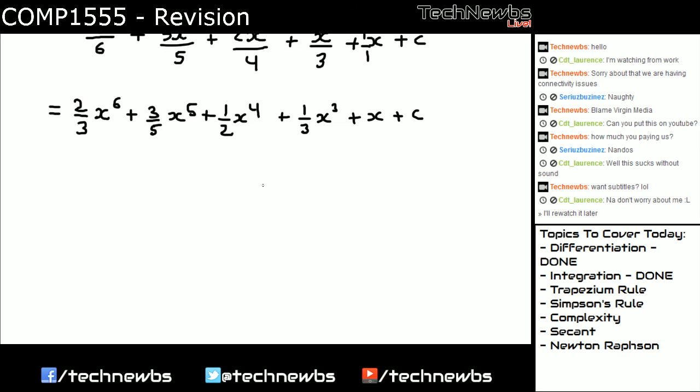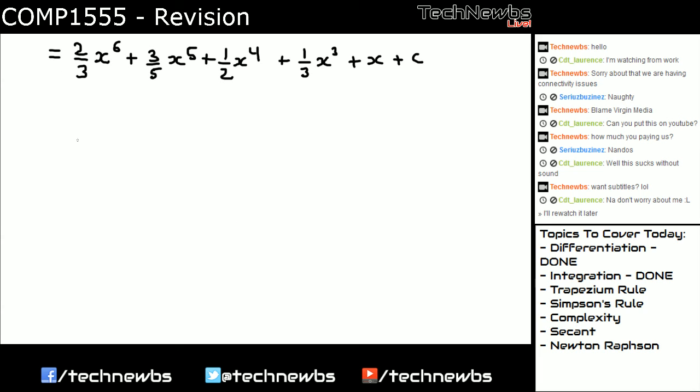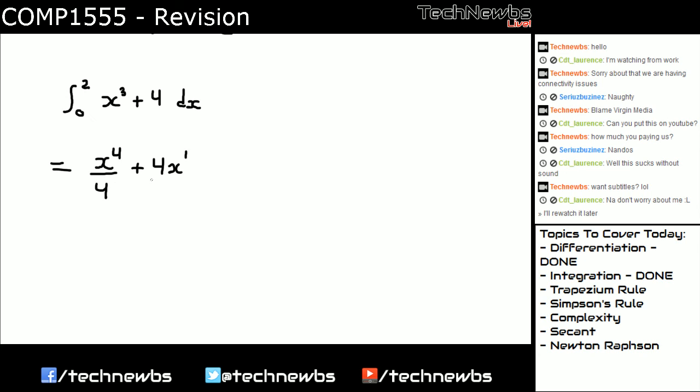That's why, let's do one with limits then. So let's do one from zero to two. And then let's just do a simple one. So x cubed plus 4 dx. So this is gonna be a simple one, but it's just to explain how to do it. So like I said, you first add one to the power, and then divide by the new power. x to the power of 4 divide by 4. And then cause it's just a 4, you just put 4x, cause it'll be 4x to the power of 1 divide by 1, so it'll be just 4x. And then you put these square brackets and you put the limits on the side.